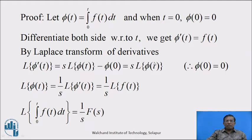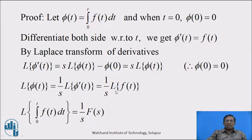By the property of Laplace transform of derivatives, we can write Laplace of phi dash of t equal to s into Laplace of phi of t minus phi of 0. Since phi of 0 is equal to 0, this reduces to s into Laplace of phi of t. From this result, Laplace of phi of t equals 1 upon s into Laplace of phi dash of t, which equals 1 by s into Laplace of f of t, because phi dash of t equals f of t. Therefore, replacing phi of t with the integral and Laplace of f of t with F of s, we get Laplace transform of integration with limit 0 to t of f of t dt equal to 1 upon s into F of s. Hence the proof.